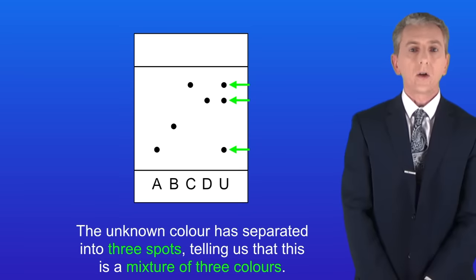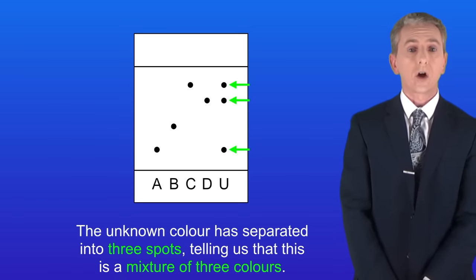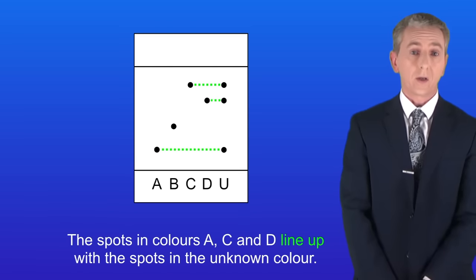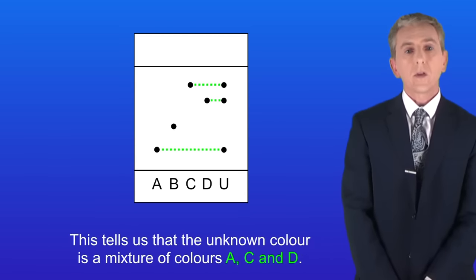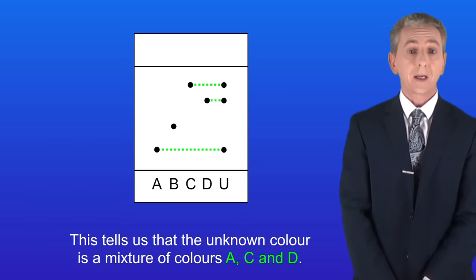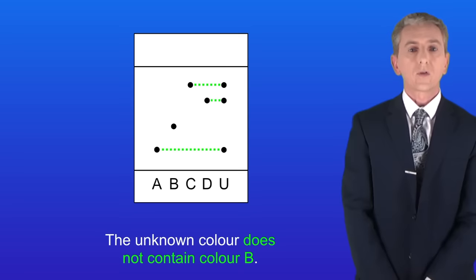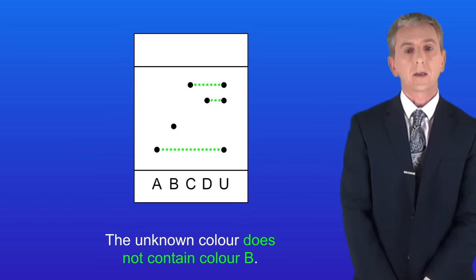Now as you can see the unknown color has separated into three spots, telling us that this is a mixture of three colors. The spots in colors A, C and D line up with the spots in the unknown color. So this tells us that the unknown color is a mixture of colors A, C and D. We can also see that the unknown color does not contain color B.